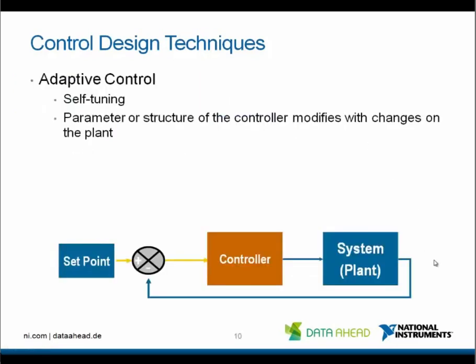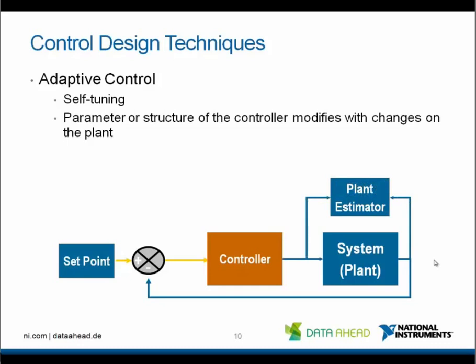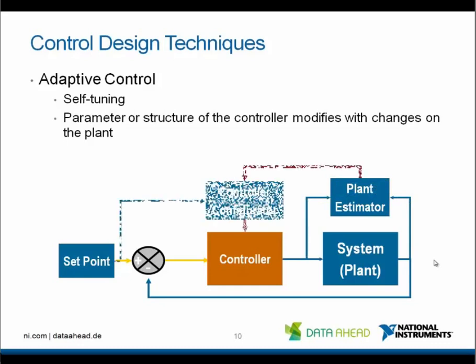Adaptive control is a more advanced technique. It is self-tuning and means that a parameter or structure of the controller modifies when the plant changes. In order to know that, the system needs to consider both the inputs and outputs of the plant, and the so-called plant estimator will in turn reconfigure the controller.